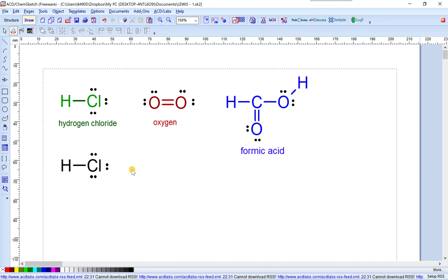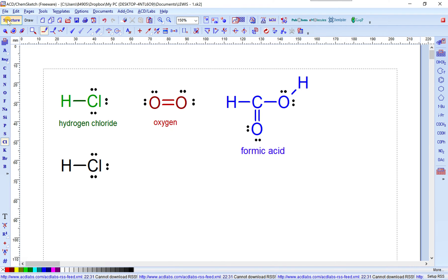Now we will continue to draw Lewis dot structure for oxygen molecule. It has a double bond here. Okay, choose the structure here and this is the oxygen. Drop out and left click on the oxygen-oxygen bond to change this single bond to double bond.